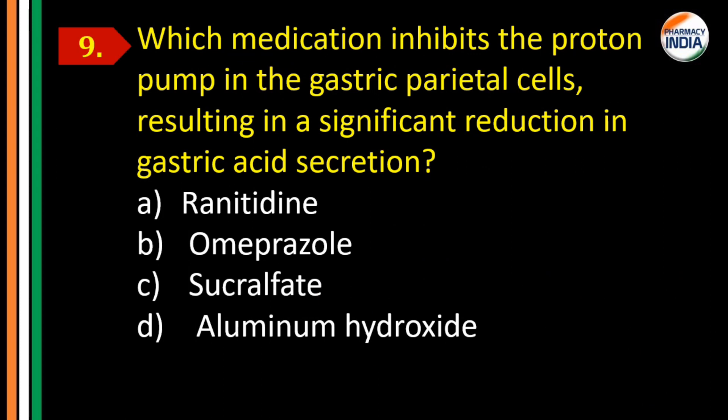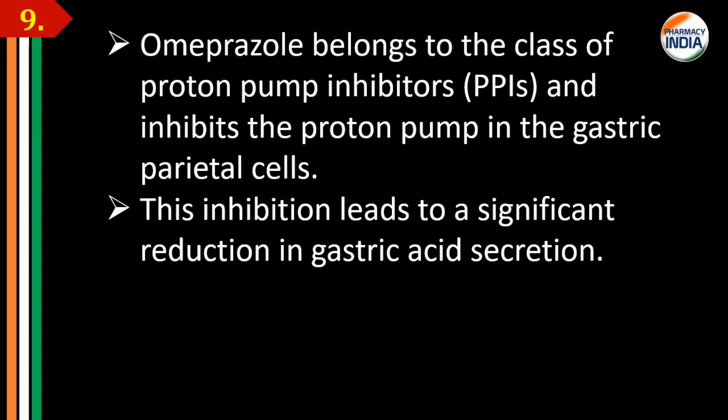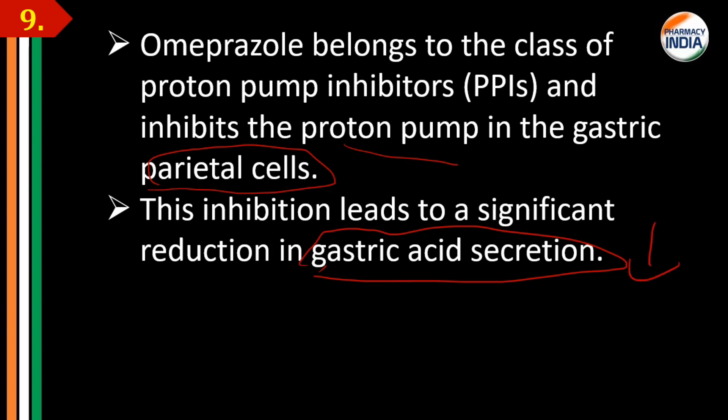Question number nine: which medication inhibits the proton pump in the gastric parietal cell, resulting in significant reduction in gastric acid secretion? Options: A) ranitidine, B) omeprazole, C) sucralfate, D) aluminum hydroxide. The correct answer is Option B, omeprazole. Omeprazole belongs to the proton pump inhibitor class and inhibits the proton pump in gastric parietal cells, leading to a significant decrease in gastric acid secretion.